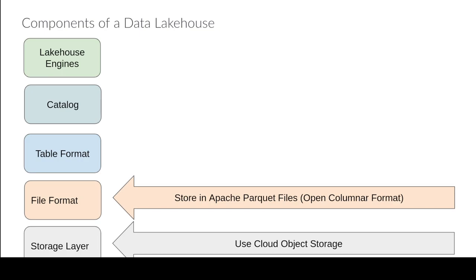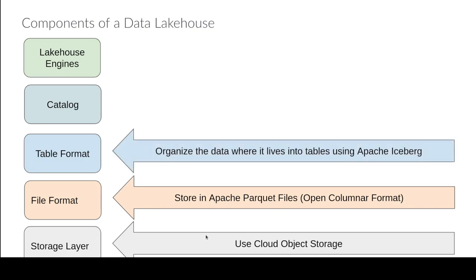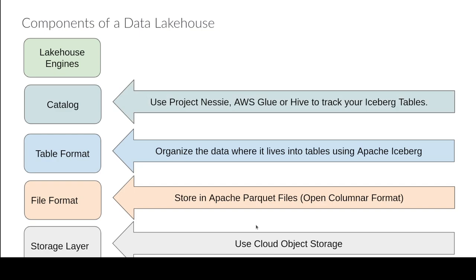That open format is typically Apache Parquet — a columnar format which is better for analytics. So you store all your data in object storage using Parquet files. But we need to organize those Parquet files so we can recognize that these thousand files are one table and these ten thousand files over here are another table. We need a table format like Apache Iceberg. And we also need some mechanism for tracking which tables exist — that's the catalog.